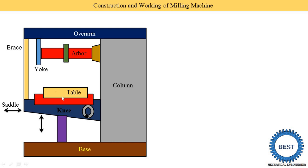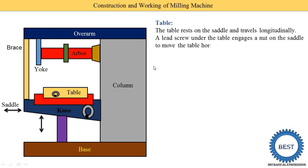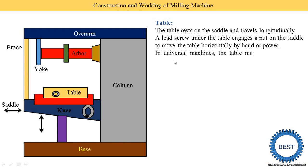The table is installed on the top part of the saddle and moves using a hand wheel. The table rests on the saddle and travels longitudinally. A lead screw under the table engages a nut on the saddle to move the table horizontally by hand or power. By rotating the hand wheel we move the table in the longitudinal direction.